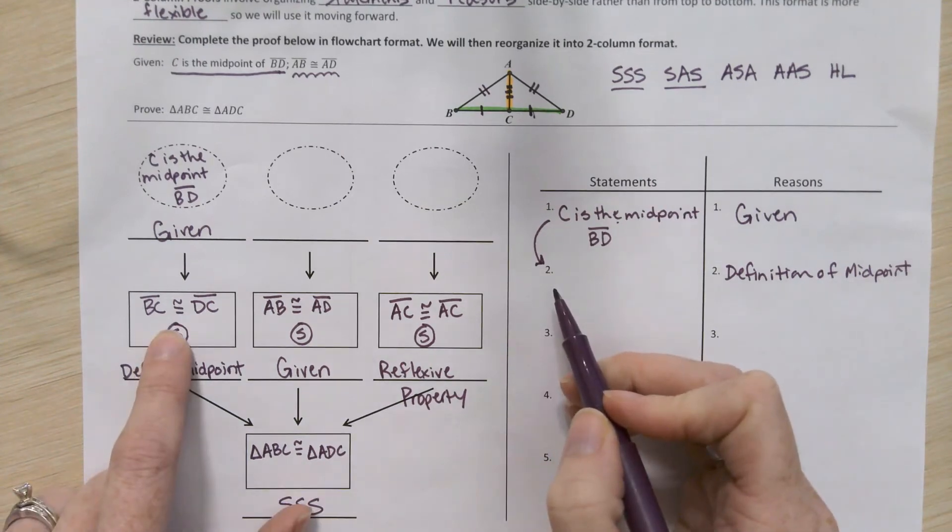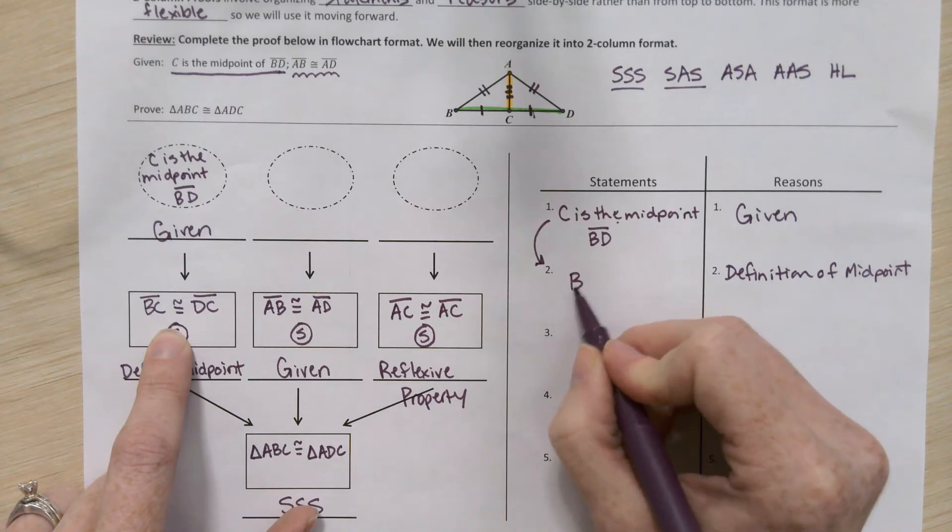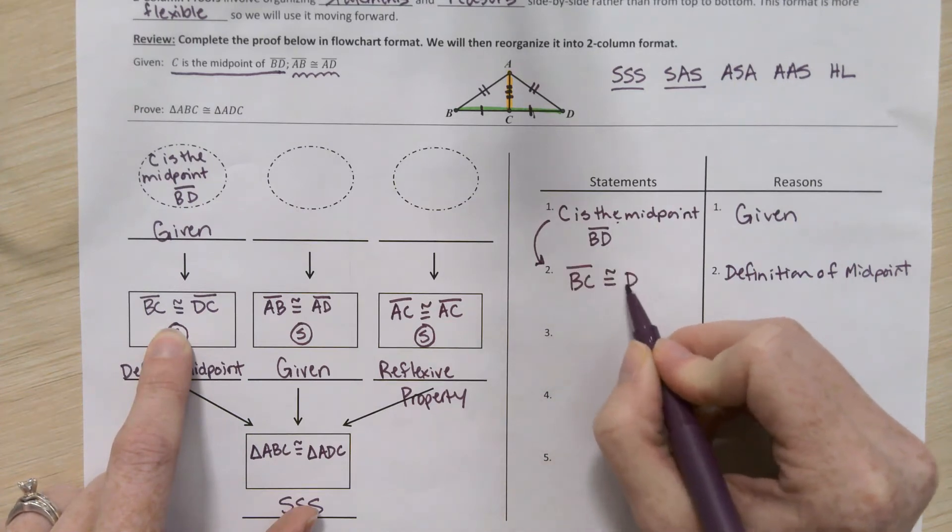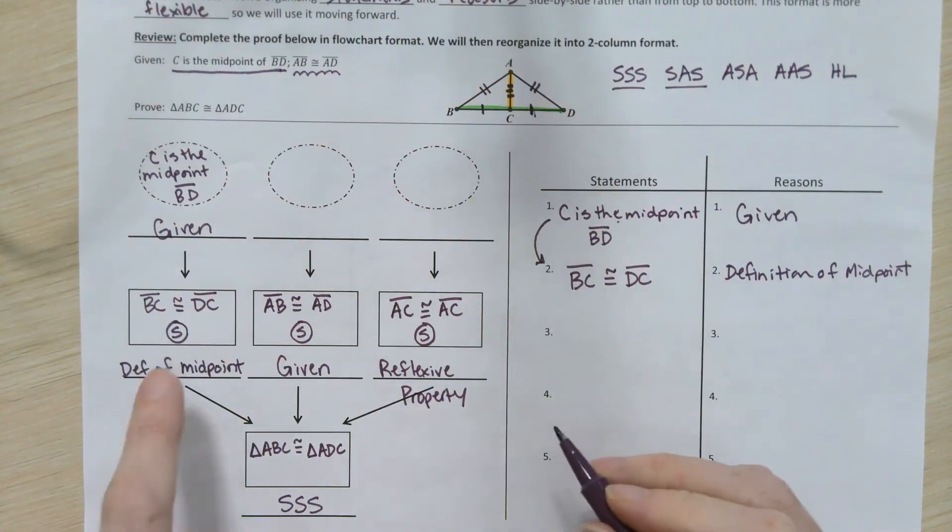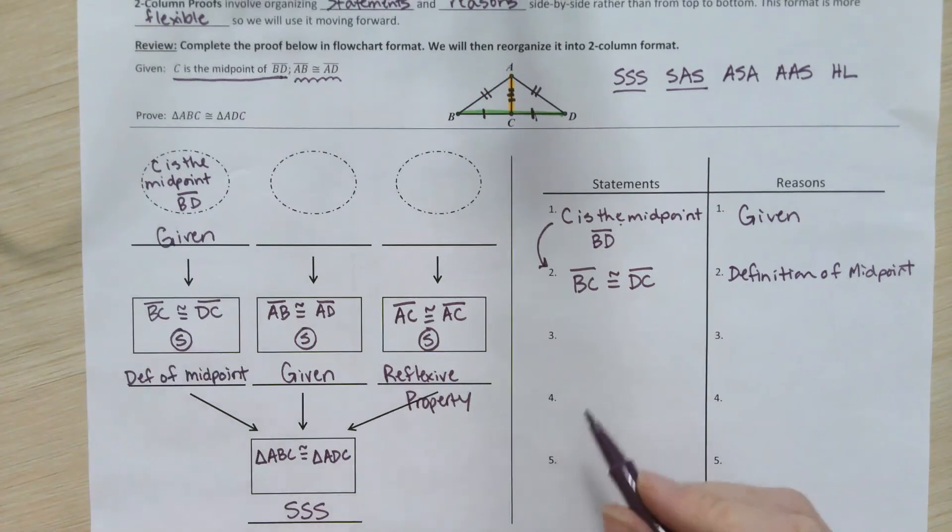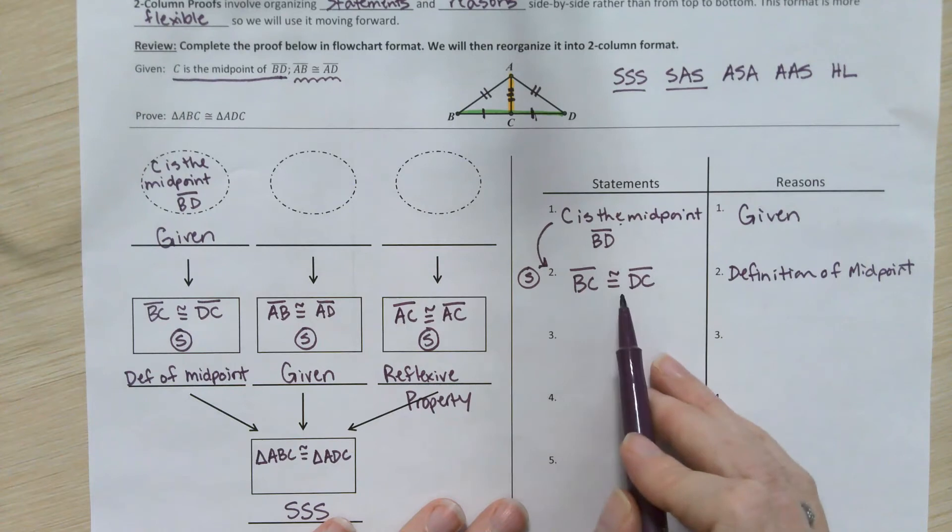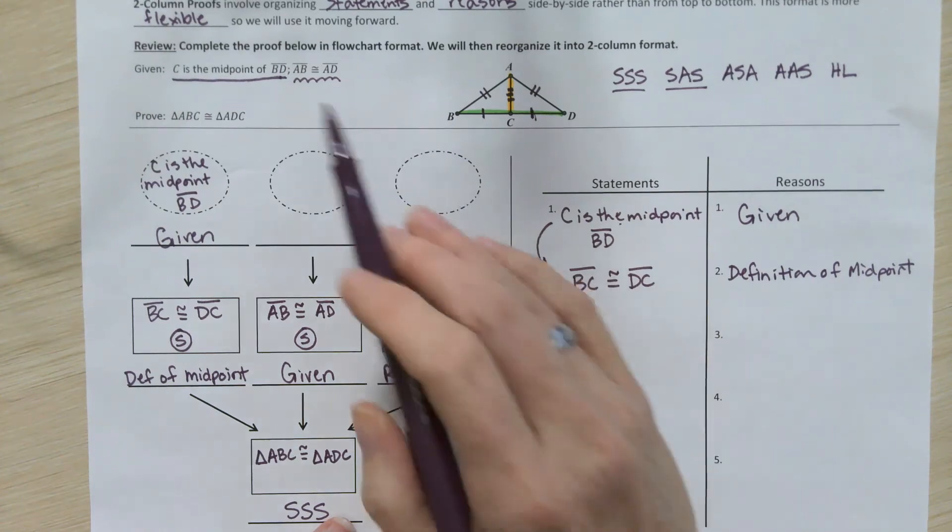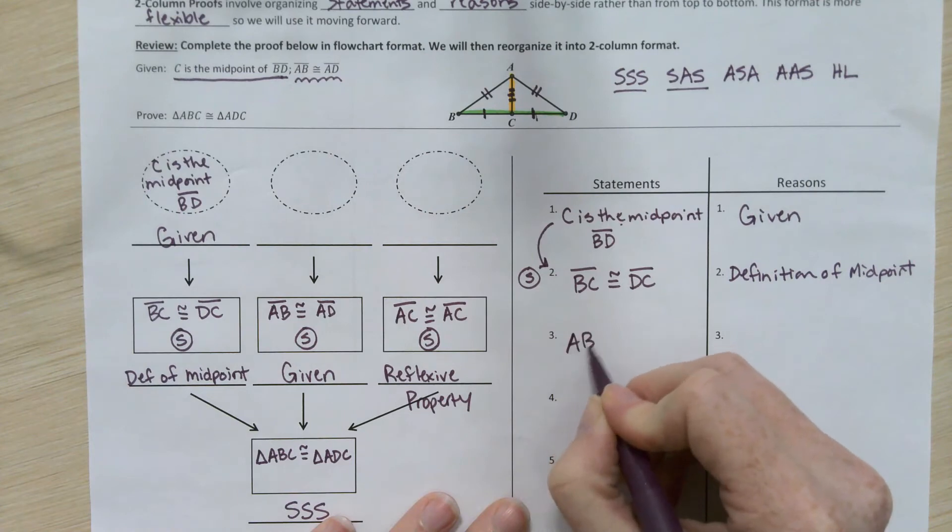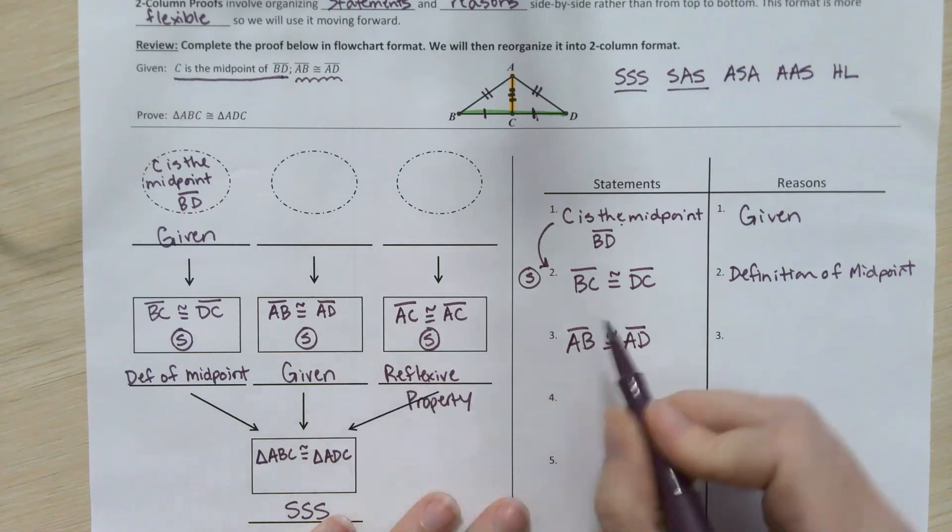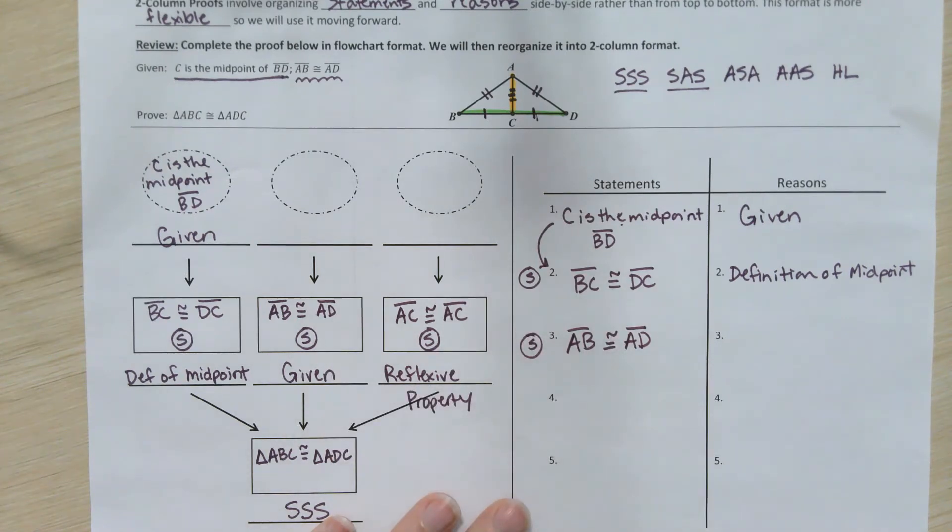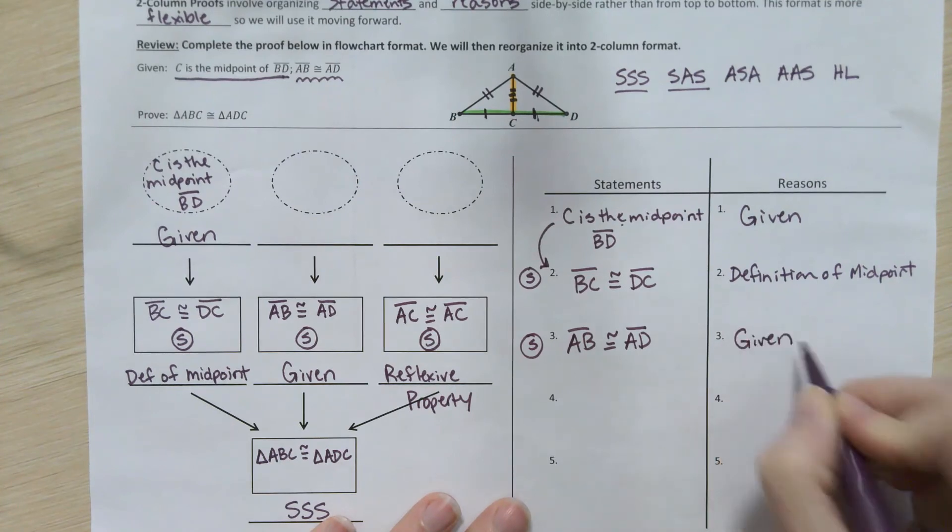And so, we would list, just like we did directly below it in the flowchart proof, that segment BC is congruent to segment DC, the ones that we marked along the bottom part of that picture. And then, if you want to keep track, since there's not a box for you to put an S in, you can just kind of put that out there next to the proof. That's a pair of congruent sides. We've used the midpoint given now and turned it into more useful congruent sides. So, we're going to move on to our next given. Segment AB is congruent to segment AD, just like we wrote in that box. We can label that with an S, since it's a pair of sides. And we can say that we knew it was true because it was given.